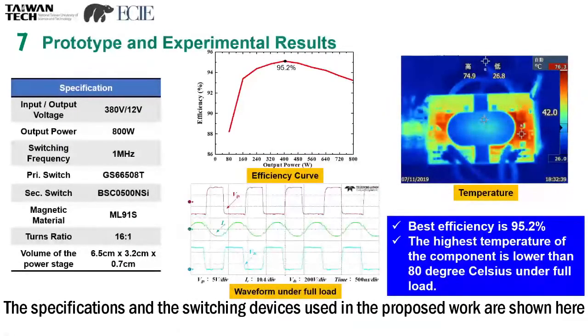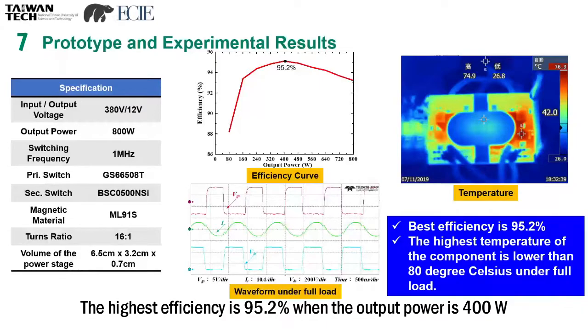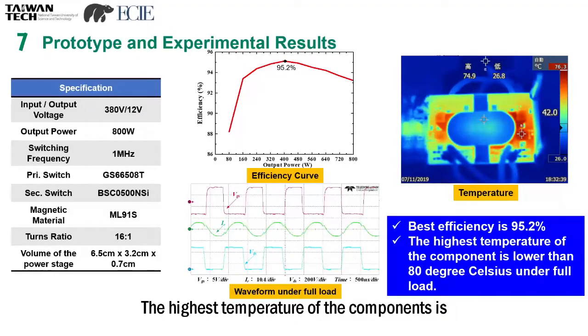The specifications and switching devices used in the proposed work are shown here. The highest efficiency is 95.2% when the output power is 400 watts. The highest temperature of the components is lower than 80 degrees Celsius under full load.